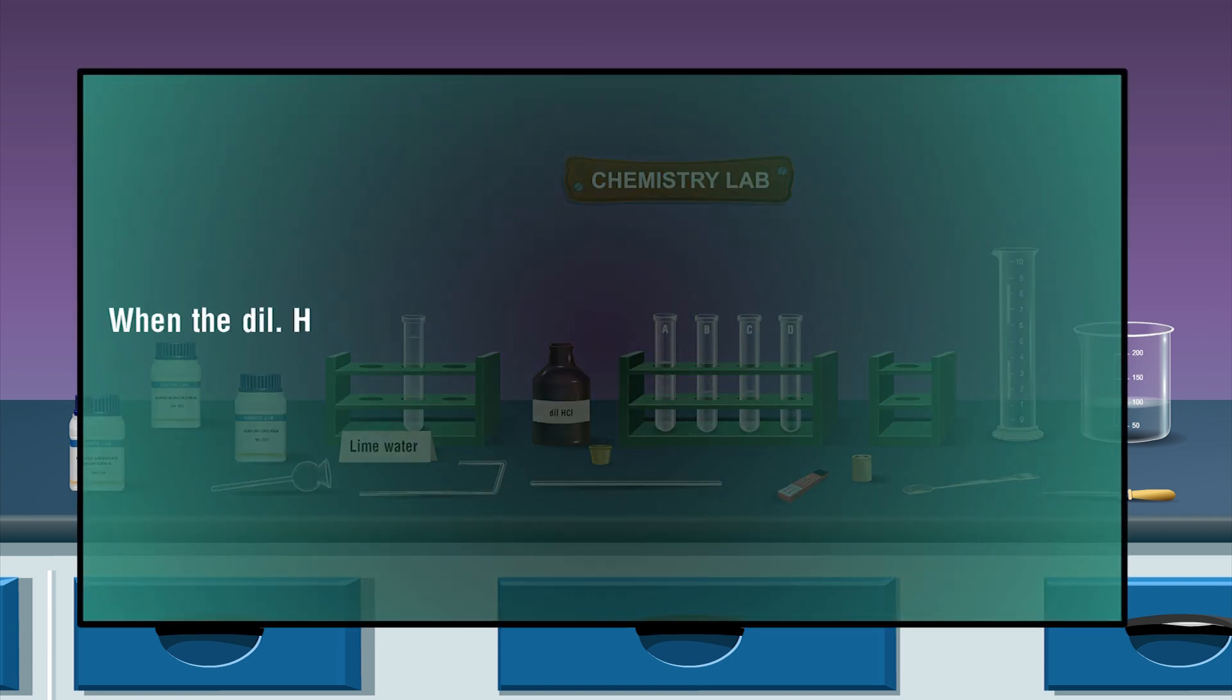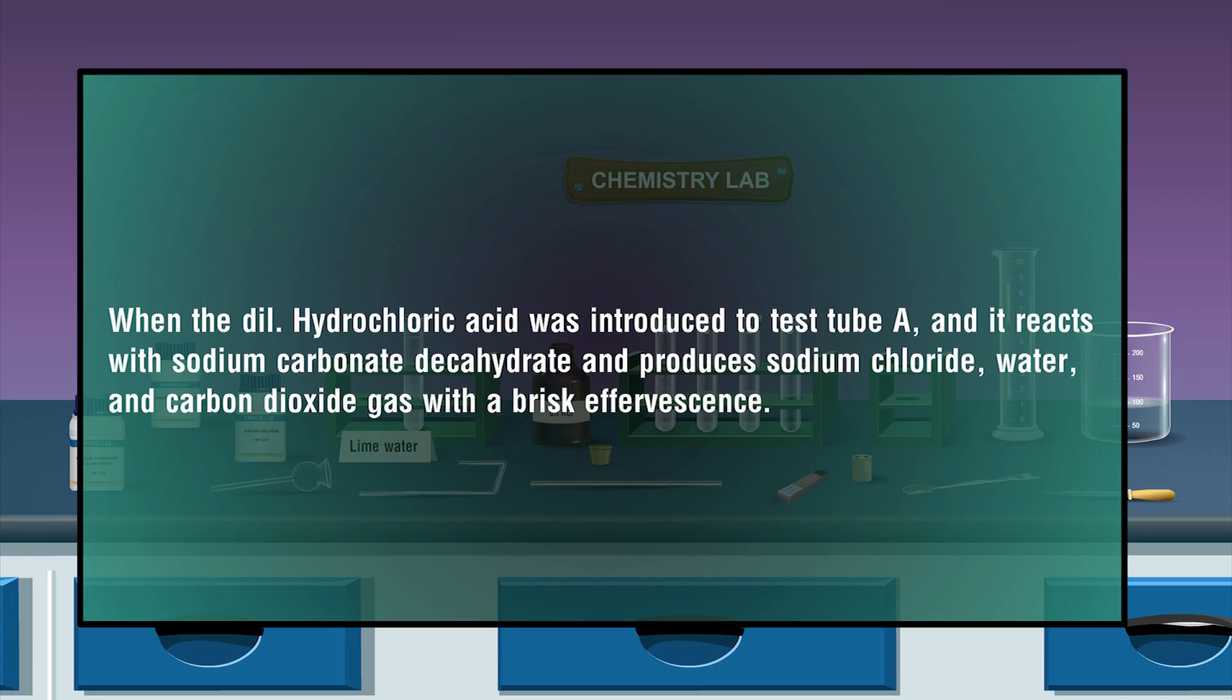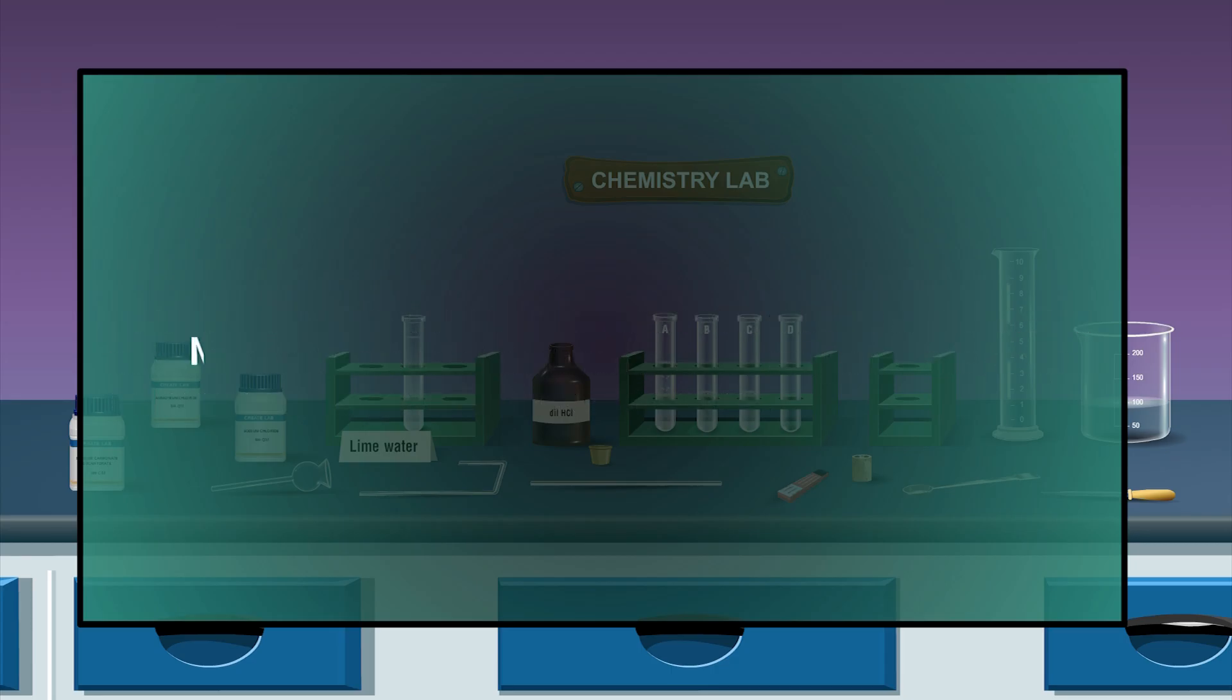When the dilute hydrochloric acid was introduced to test tube A, it reacts with sodium carbonate decahydrate and produces sodium chloride, water, and carbon dioxide gas with a brisk effervescence. Na2CO3 solid plus 2 HCl aqueous gives 2 NaCl aqueous plus CO2 gas plus H2O liquid.